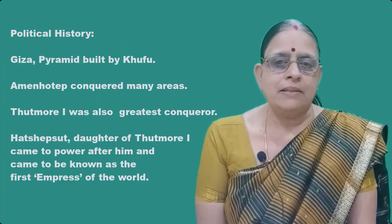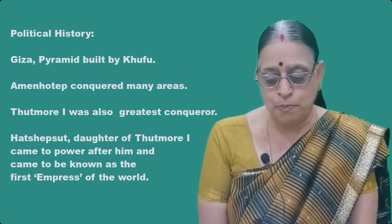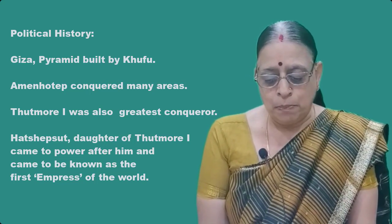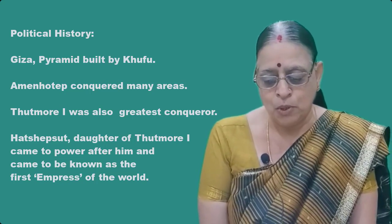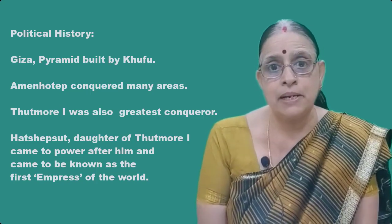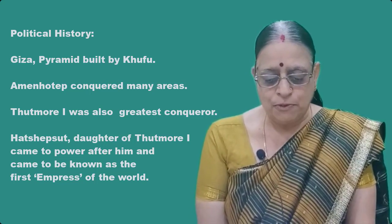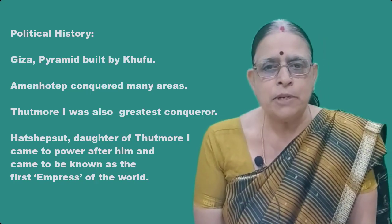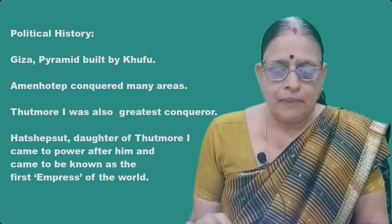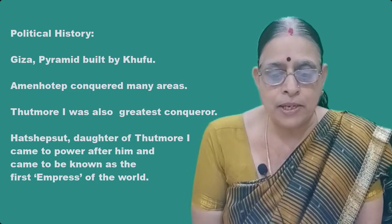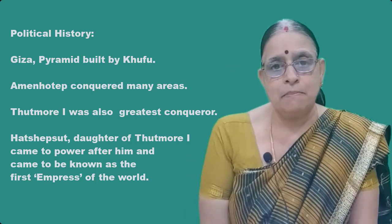In Giza there is a great pyramid, considered as the largest pyramid in the world, built by King Khufu. Amenhotep was considered an important pharaoh who conquered many areas and expanded the kingdom by acquiring the surrounding areas. Thutmose the First was the greatest conqueror — ambitious to conquer other areas and expand the kingdom. He had a daughter by name Hatshepsut, who became the first empress of the world. Empress is the feminine gender of emperor — Maharani, a female ruler.